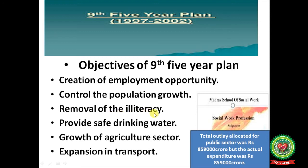Further objectives of the 9th five year plan included: removal of illiteracy by providing education in government schools; providing safe drinking water; growth of the agriculture sector by giving HYV seeds to farmers at subsidized rates and training farmers in new agricultural technology; and expansion in transport, including shipping, buses, railways, and aeroplanes. These were the main objectives of the 9th five year plan.